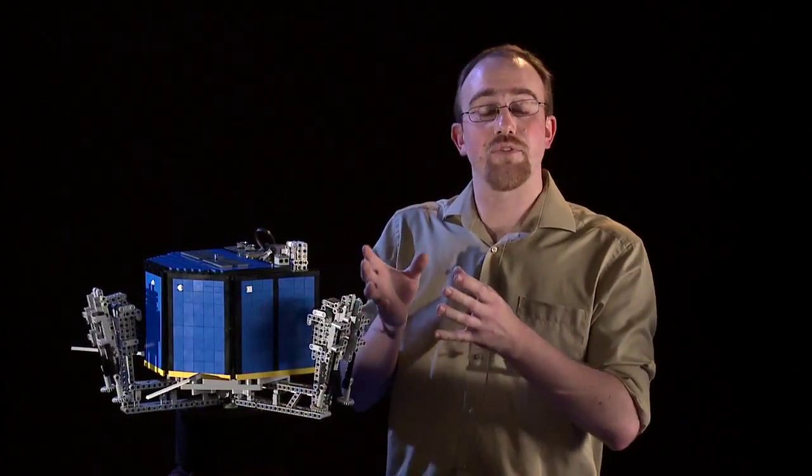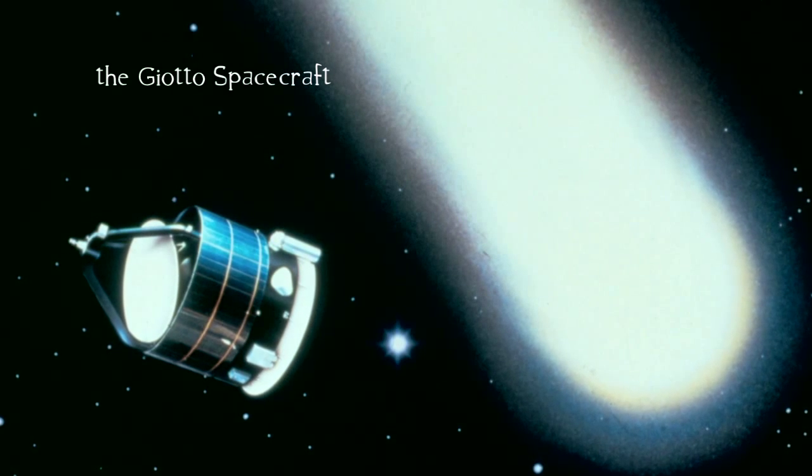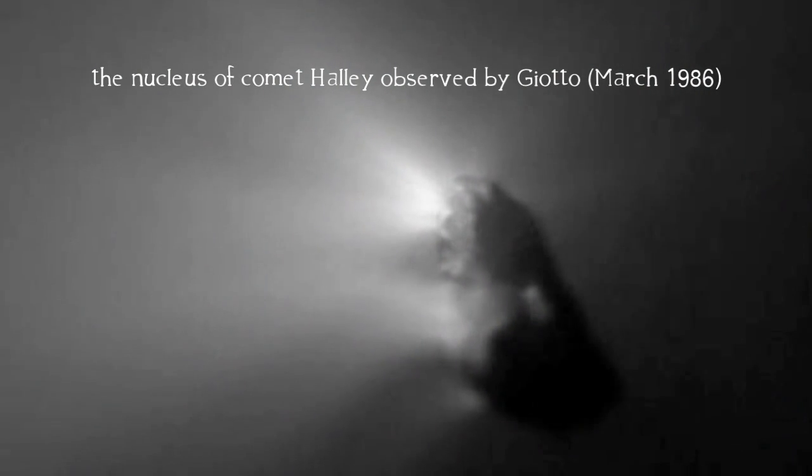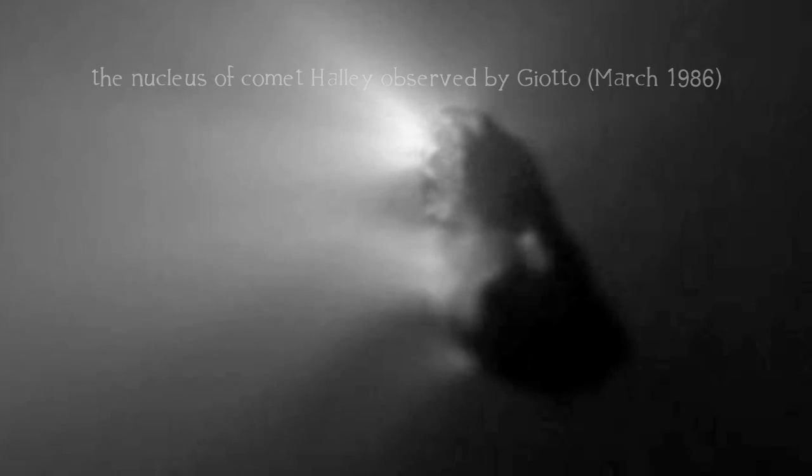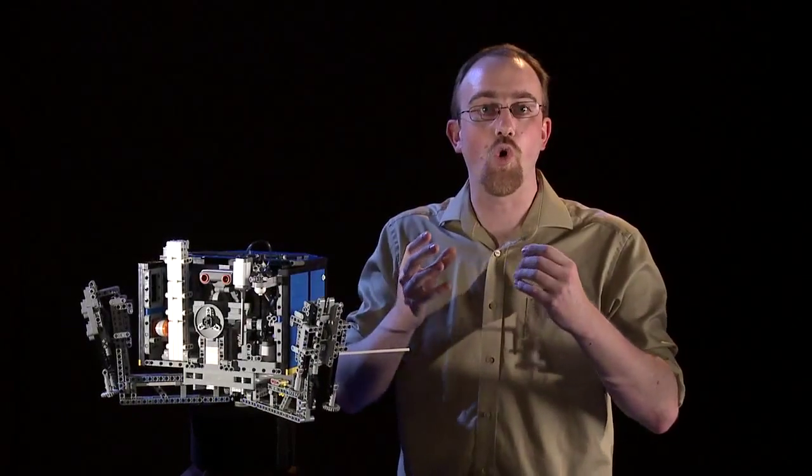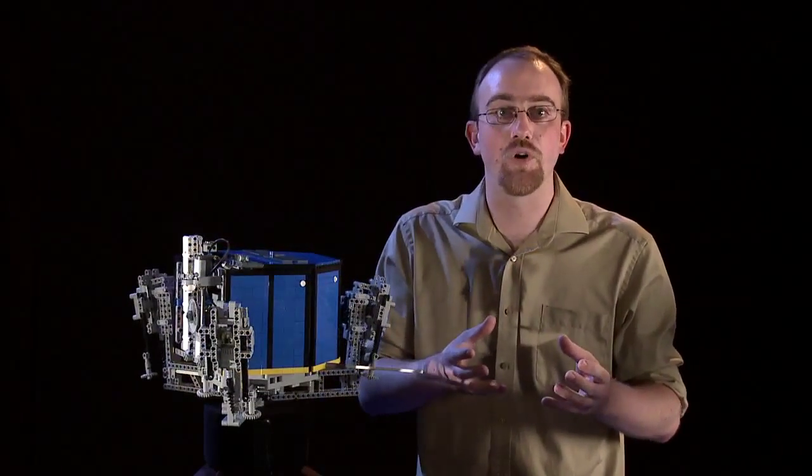Following the success of Giotto in 1986, however, the Europeans decided to do something a bit different. They decided to have a long-duration encounter with the comet. They decided to build a space mission to enter orbit around the nucleus of a comet and to deposit a lander onto the surface.